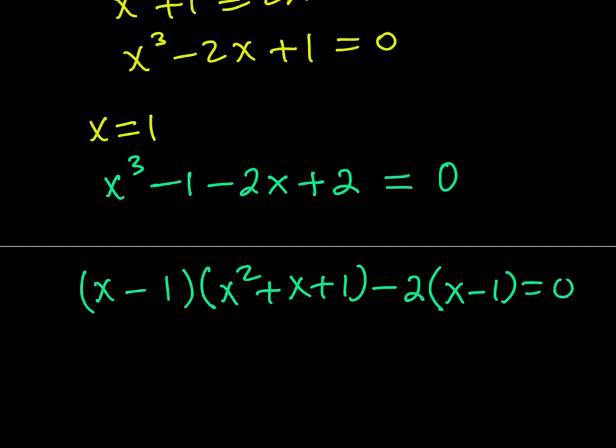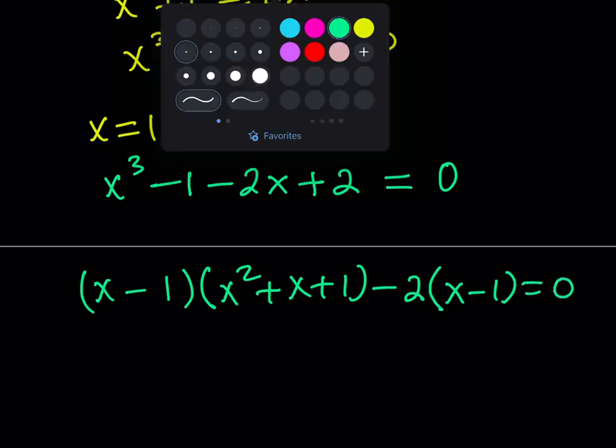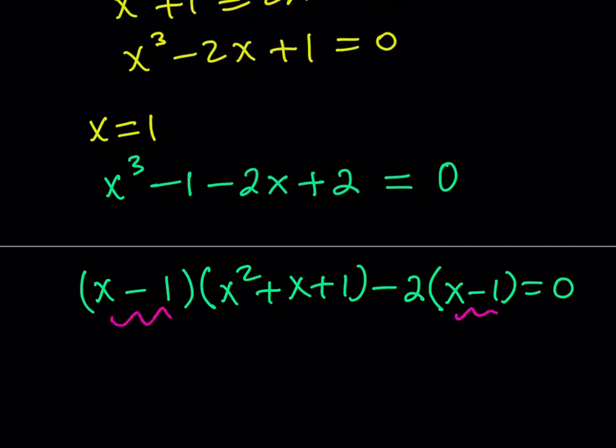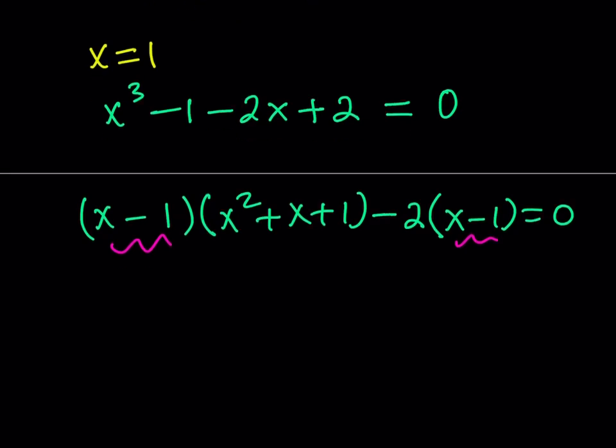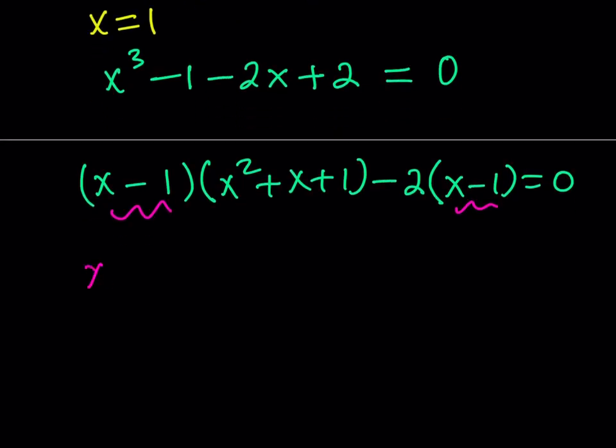So now we have x minus 1 as a common factor, which allows you. And obviously, this is not a surprise because we knew that x equals 1 is a solution. So x minus 1 has to be a common factor. We knew that beforehand. So let's go ahead and pull that out. If you take out x minus 1, then you should be getting something like x squared plus x plus 1 minus 2.